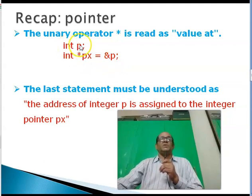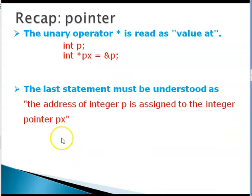When you say int t, it declares an integer variable t. When you say int star px, it will declare a pointer variable px and when you say is equal to ampersand t, it will initialize its value as address of t. So, now px will contain address of t. This we need to remember very carefully. This last statement must be understood as the address of t is assigned to the integer pointer px.